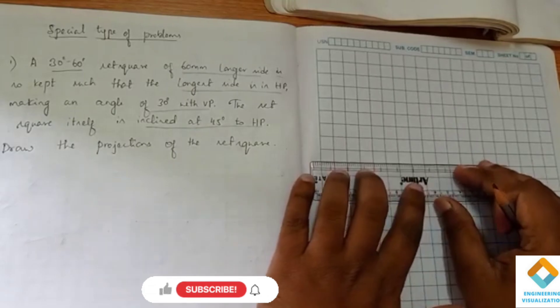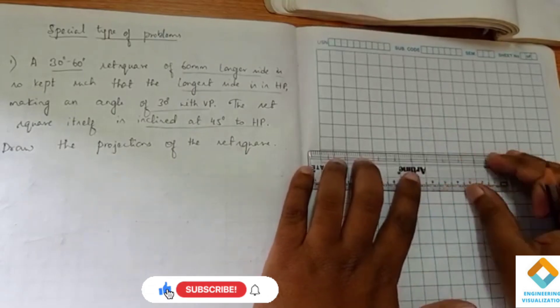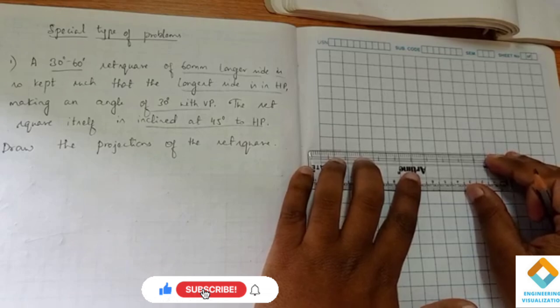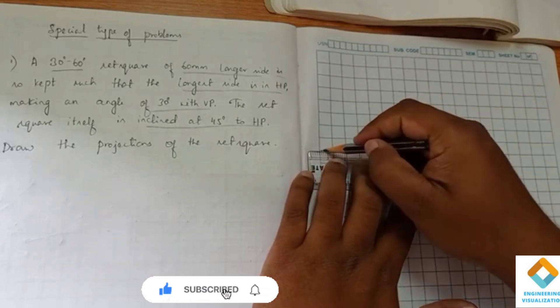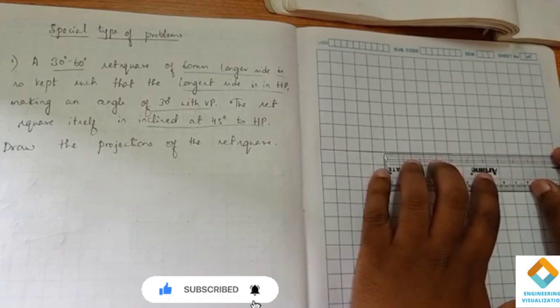I'll be showing how to construct a set square here. The problem is easy, the only thing here is we have to construct a set square.